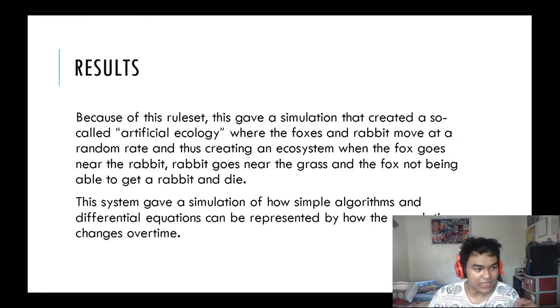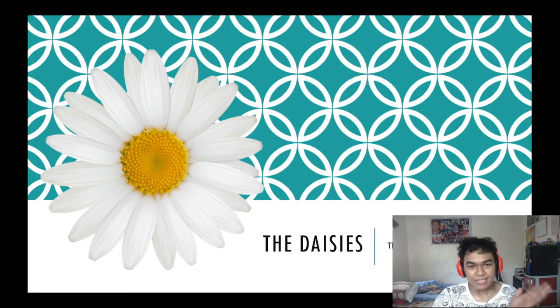So how does this impact the population dynamics? Basically what they made is an artificial ecology in which they're creating this ecosystem where the fox eats the rabbit, and if it doesn't eat the rabbit, it dies. This is a very great artificial representation of how an ecosystem is affected or how population could be affected by certain means of random events.